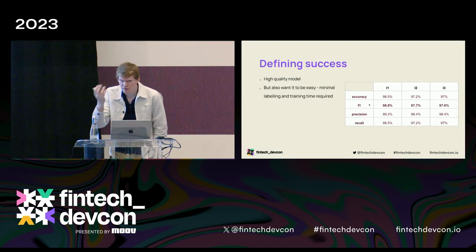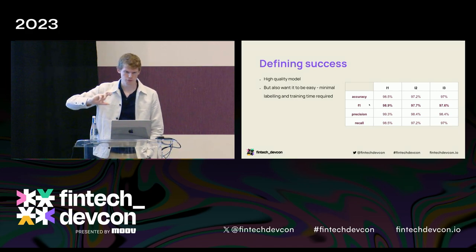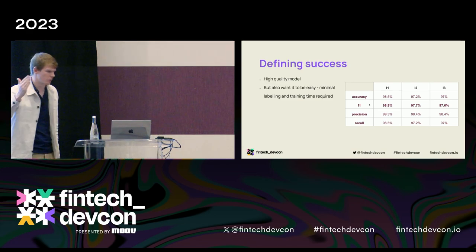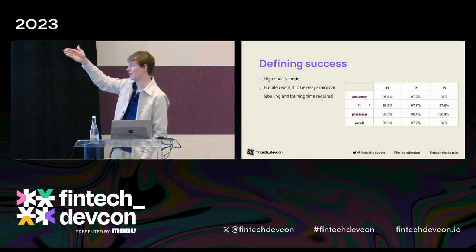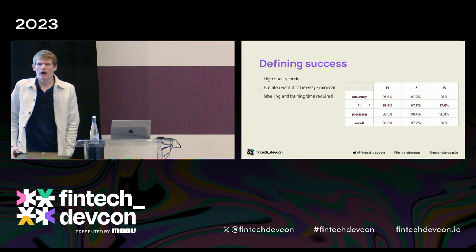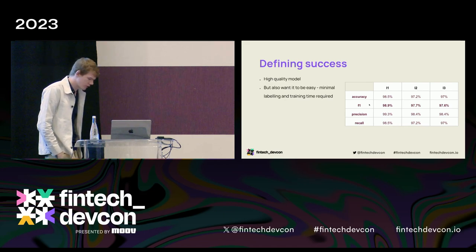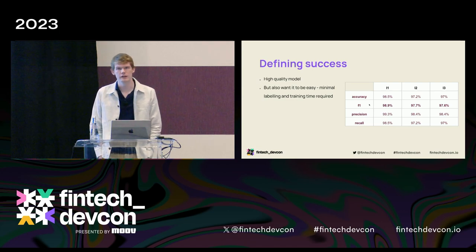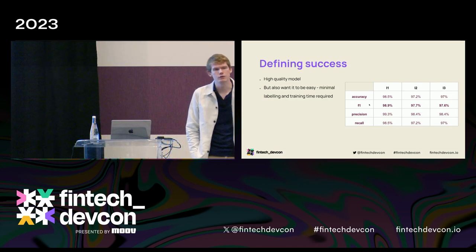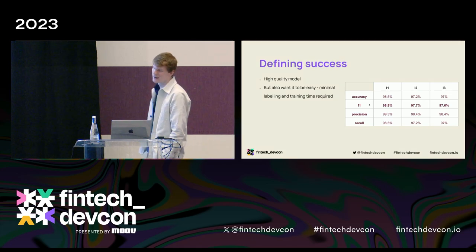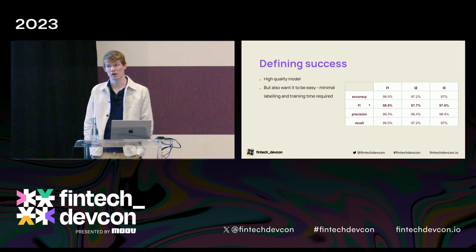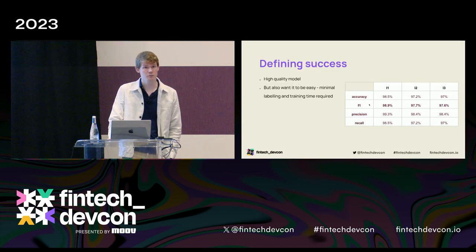Defining success when going into a new market: two things. First, you want a high-quality model with accuracy, F1, precision, and recall — with F1 being the most important. Second, you also want it to be easy. If you want to enter new European markets, there are many countries, most speaking different languages. If it takes huge amounts of time and resource to go into every single new market, it's not really successful. You want it to be as easy as possible to enter new markets while still producing something really high-quality.